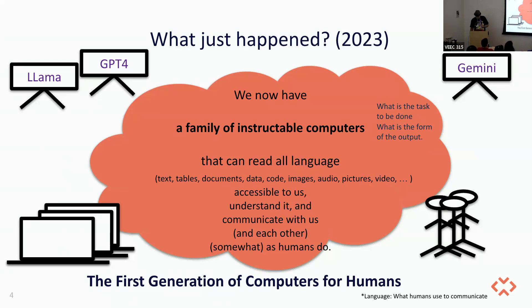Instead of just old-style computers, and instead of people being our only exemplars of entities that understand language, we now have these new hybrid creatures that behave a little like humans and a little like old computers. They're able to work at a much more consistent scale with what machines can do, but they're also able to process language as no old computer could. We've got a new computer, and the whole goal is to figure out how we can use it.